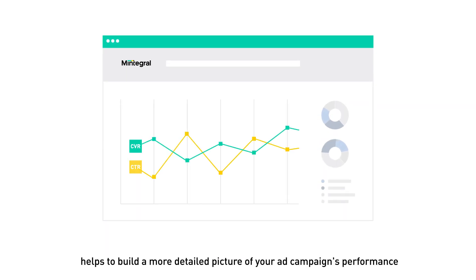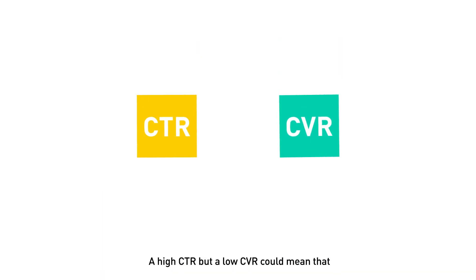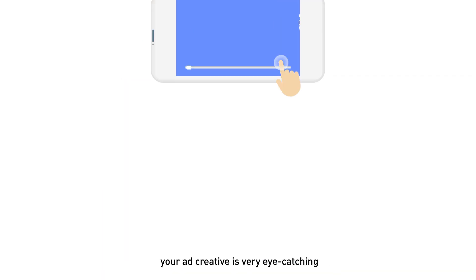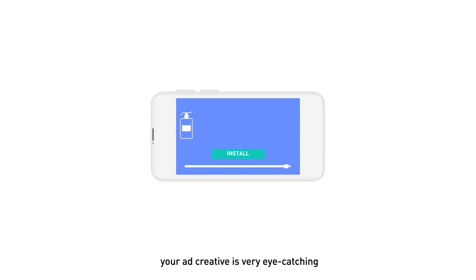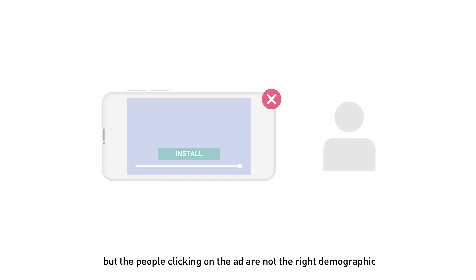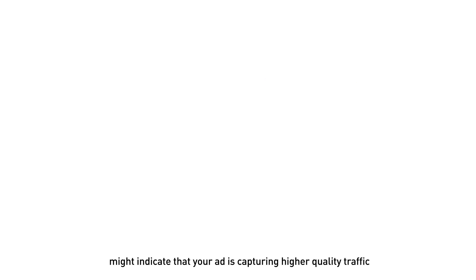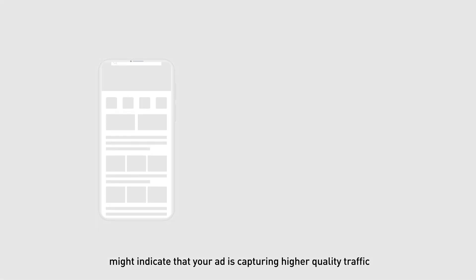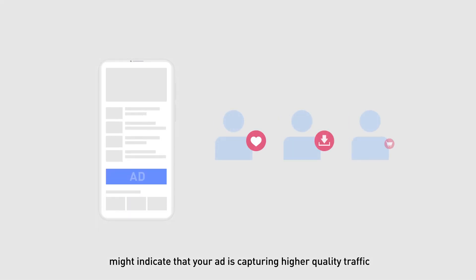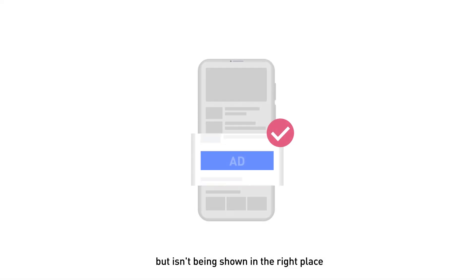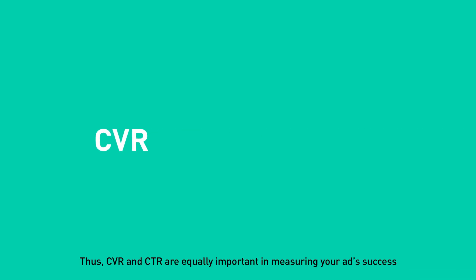A high CTR but a low CVR could mean that your ad creative is very eye-catching, but the people clicking on the ad are not the right demographic. Conversely, a low CTR but high CVR might indicate that your ad is capturing higher-quality traffic, but isn't being shown in the right place.